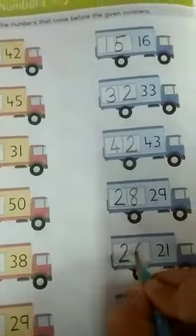Next is 38. So, 37 comes before this 38. 21. So, again 20 will come before 21.